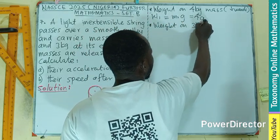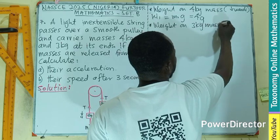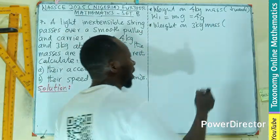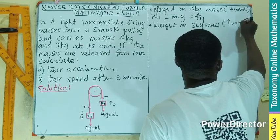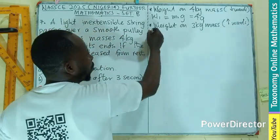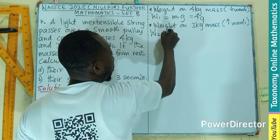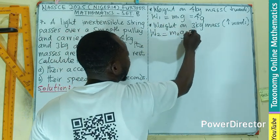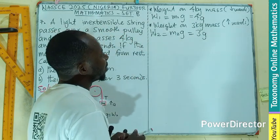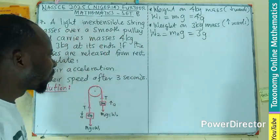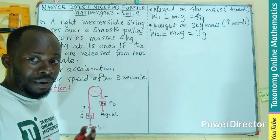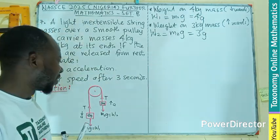Now for the weight on the 3 kg mass: the 3 kg will be moving in the direction of acceleration, which is upward. So the weight w2 equals mass 2 times g, which is 3 times g. Since the tensions are the same and both act upward, we can now find the net forces.